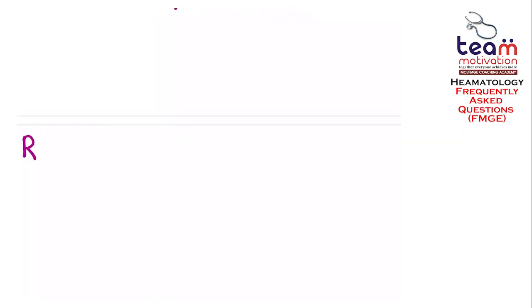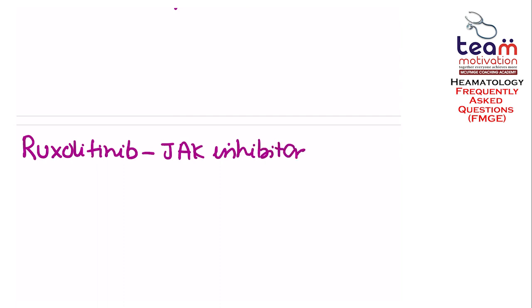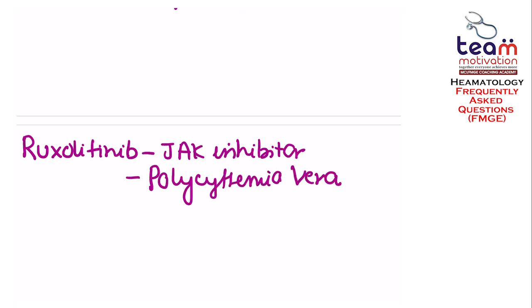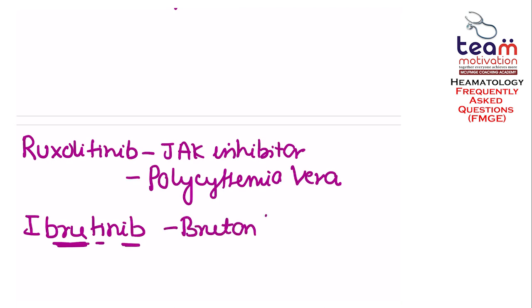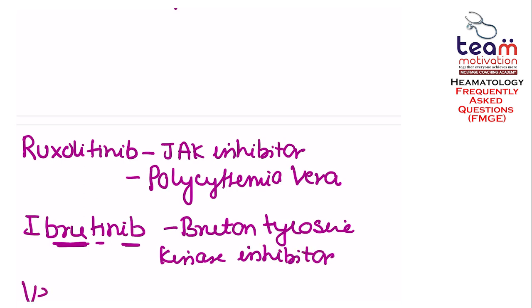You should also remember ruxolitinib, which is a JAK1 and JAK2 inhibitor used in polycythemia vera. Then ibrutinib — from the name, 'bru' stands for Bruton's tyrosine kinase — so ibrutinib is a Bruton's tyrosine kinase inhibitor. Venetoclax is a BCL-2 inhibitor.